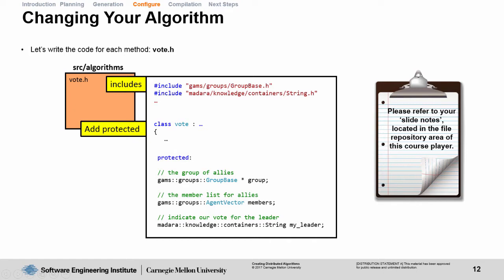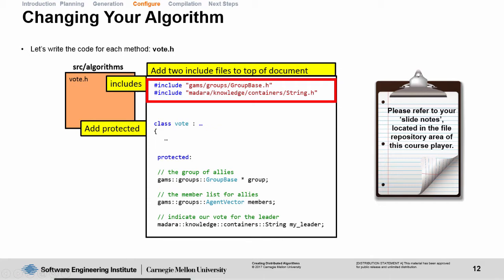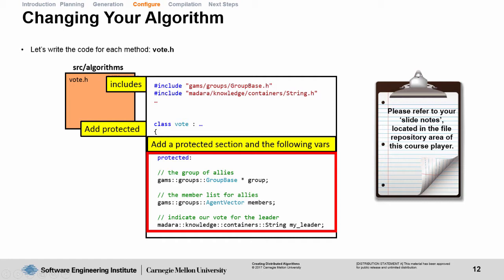First, we specify two header includes: group base and string at the top of the document. Group base we need to reference the allies group, to look at its members, and to see what our ranking in the group is. The second include is about the string container class in MADARA. This is a container class that allows us to have a reference inside the knowledge base to a string value. You can see at the bottom of the class we have this container myLeader, which is who we're going to vote for so other people know exactly who we think the leader is. We can use this value later to see if everyone is agreeing on the same leader.